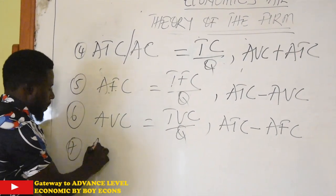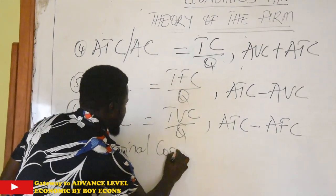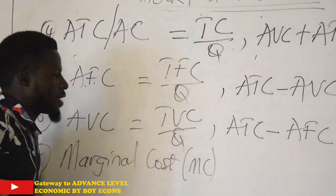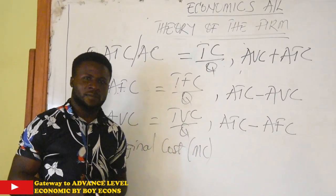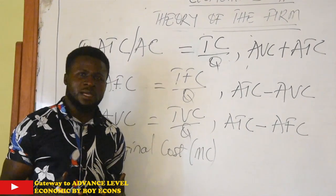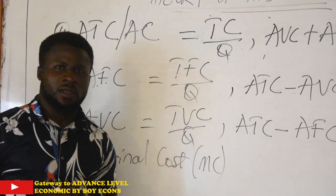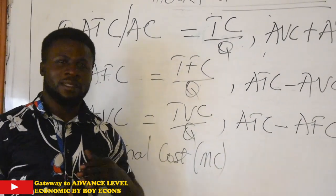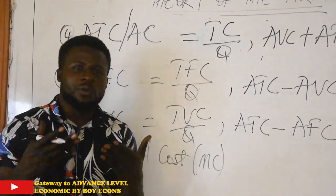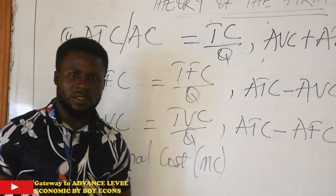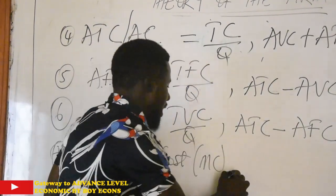Lastly, we have marginal cost. Marginal cost simply refers to that extra expenditure that a firm incurs as a result of the production of one additional unit of output. When you produce one additional unit of output, the extra cost that you incur or you pay for or you sacrifice is what we call marginal cost. The additional change in total cost as a result of one change in output.